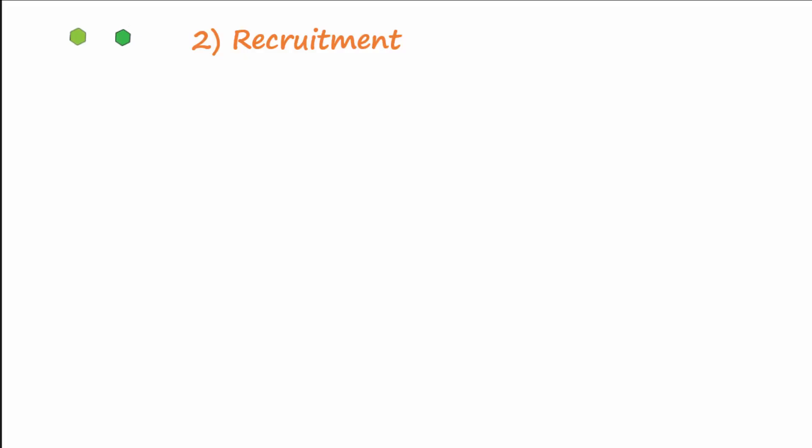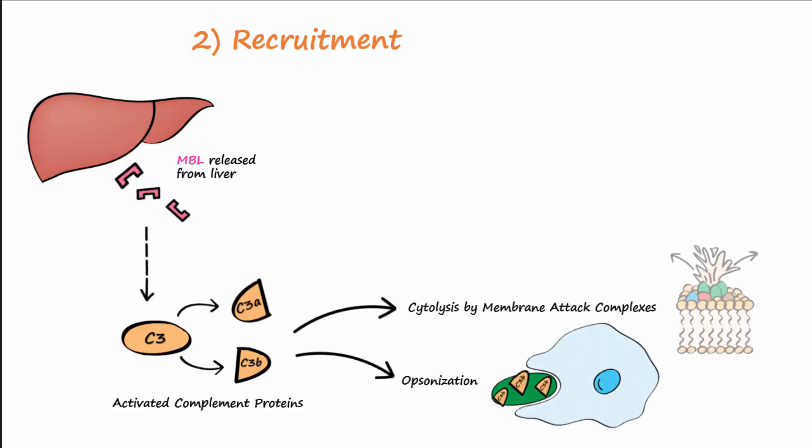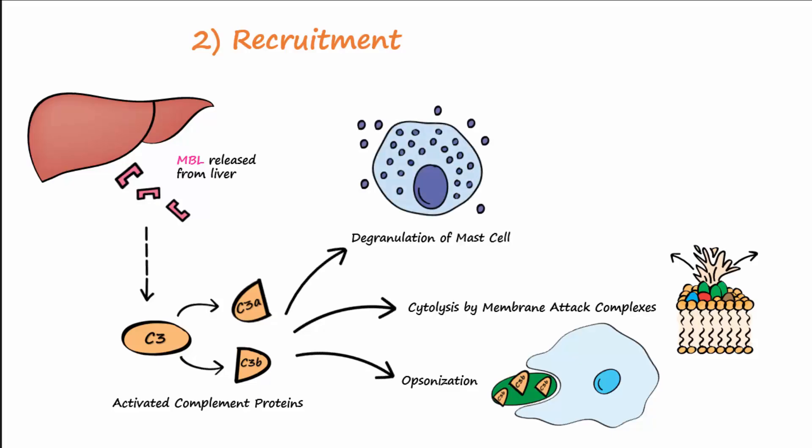TNF-alpha and IL-1 also travel to the liver and stimulate it to produce acute phase reactants, specifically mannose-binding lectin called MBL. By way of the lectin pathway, MBL activates complement proteins in the blood, which brings about enhanced opsonization and cytolysis by formation of membrane attack complexes. Complement proteins also induce degranulation of mast cells, resulting in release of histamine, which causes vasodilation and endothelial retraction.